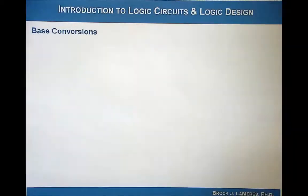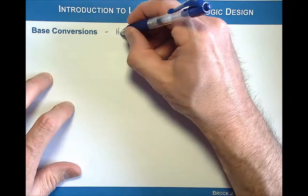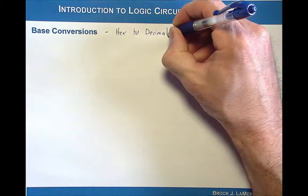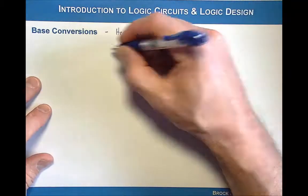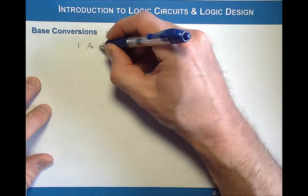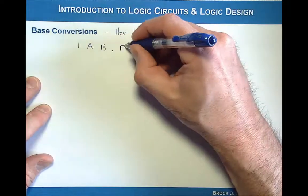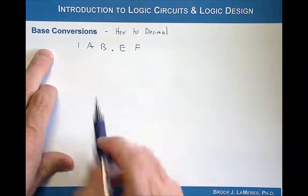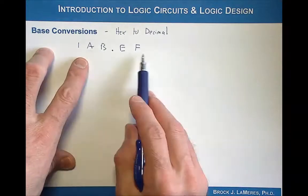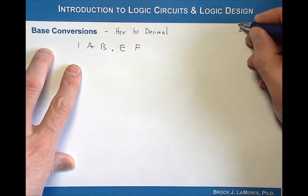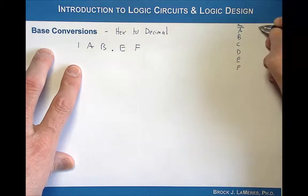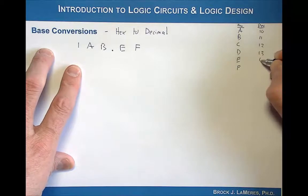Let's look at one last one: converting hex to decimal. Let's take the example 1AB.EF base 16. When you do hex to decimal, you need to know the decimal values of the hex letters. We can make a little table: hex A, B, C, D, E, F have decimal equivalents 10, 11, 12, 13, 14, and 15. That's something you'll commit to memory over time.